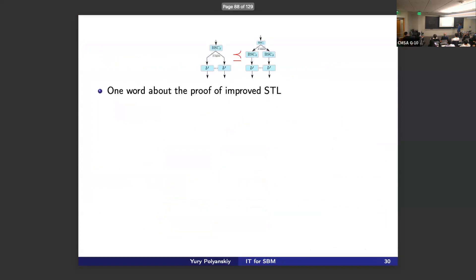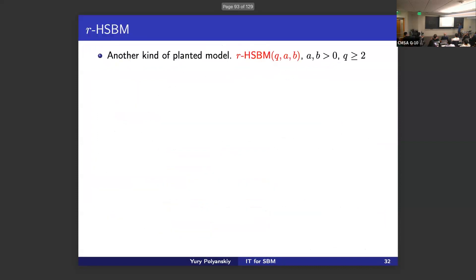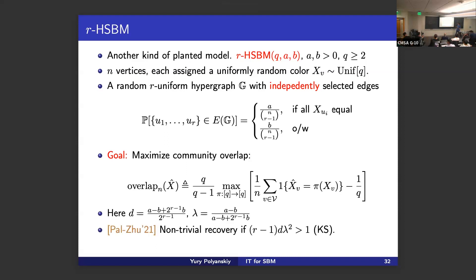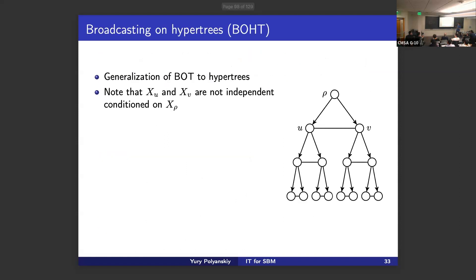In hypergraph SBM we plant a hyperedge U_1,...,U_R with probability A/C(R-1) if all colors are the same, and B/C(R-1) otherwise, to keep degree constant. The local structure is broadcasting on hyper-trees. The twist compared to the tree case is: when you condition on the input, the R−1 outputs are now correlated rather than conditionally independent. You generate them in a coordinated fashion — they're conditionally independent given the hyperedge variable, but not given the root directly.